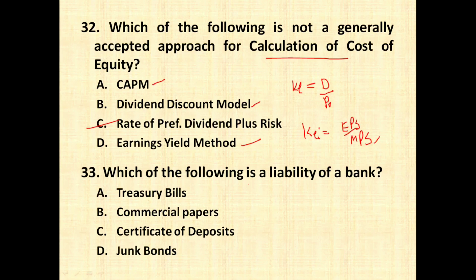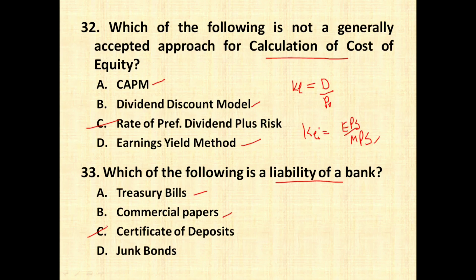The next question: which of the following is a liability of a bank? Treasury bills are issued by the government and purchased by banks or cash-rich companies. Commercial papers are securities issued by companies and usually purchased by banks. Certificates of deposit (CDs) are short-term securities issued by banks and purchased by cash-rich companies. To remember the difference: CPs are issued by companies and purchased by banks; CDs are issued by banks and purchased by companies.